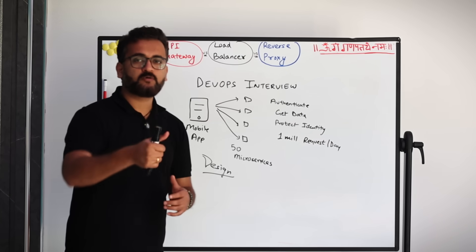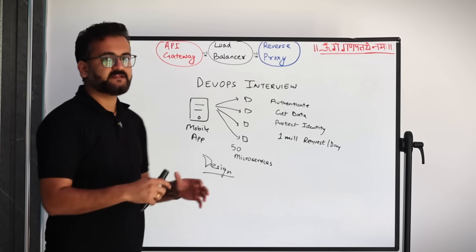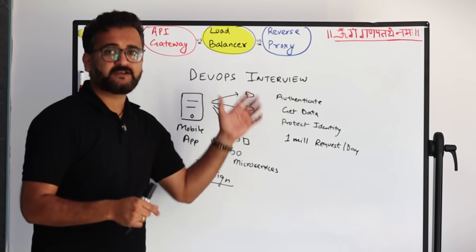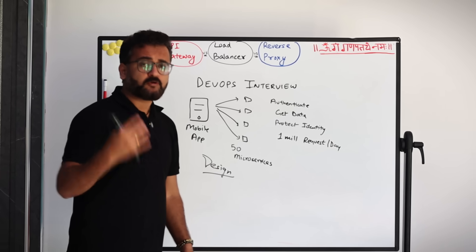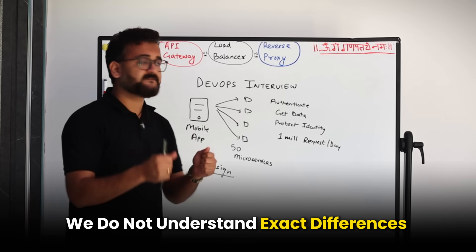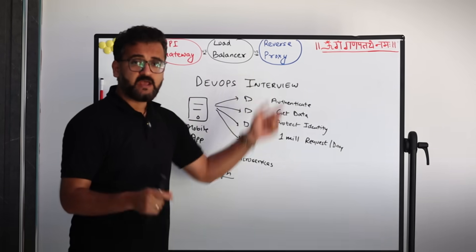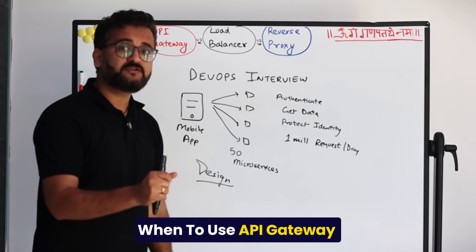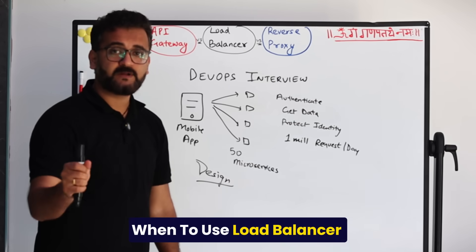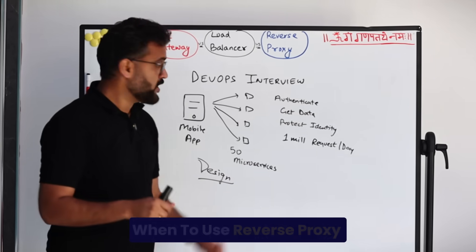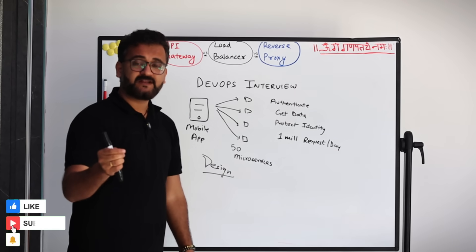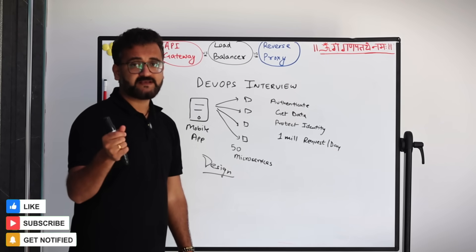When we see this problem, we try to jump to a conclusion that we might have to use an API gateway, a load balancer, or a reverse proxy — but the problem is we don't understand the exact differences between these three and, most importantly, when to use each one.